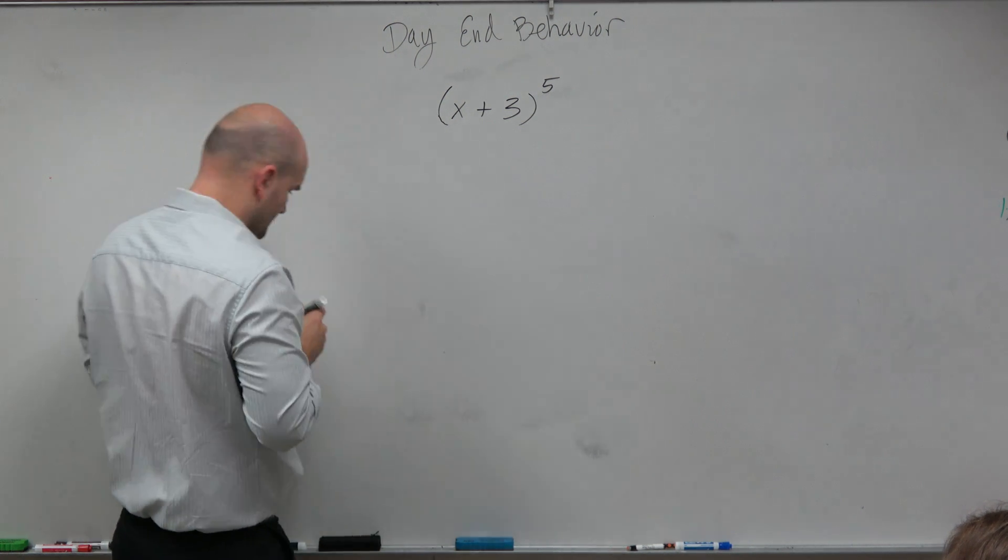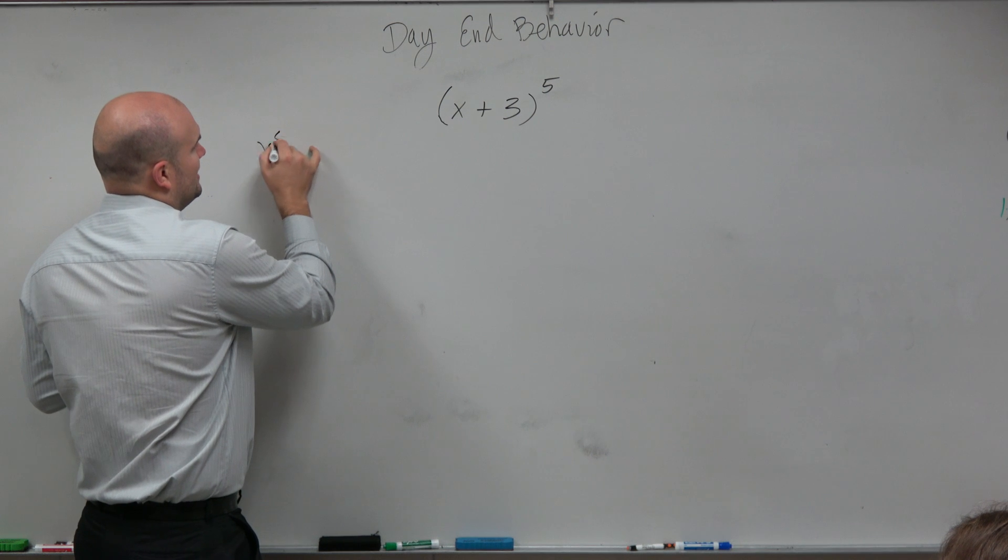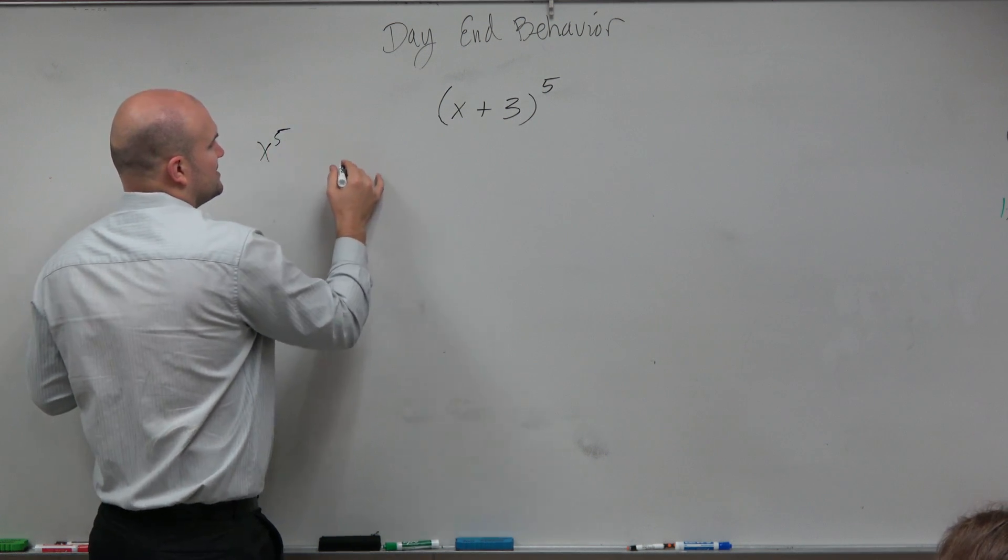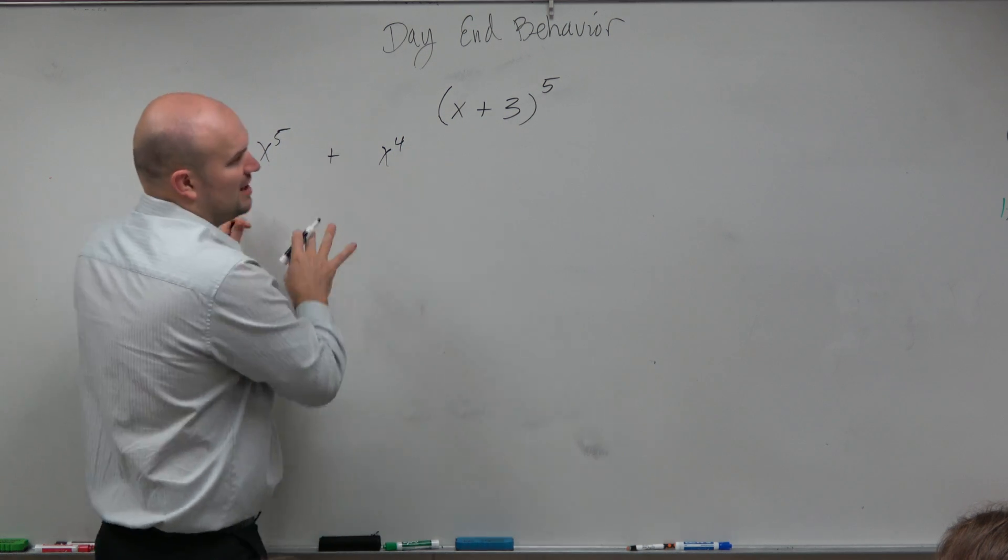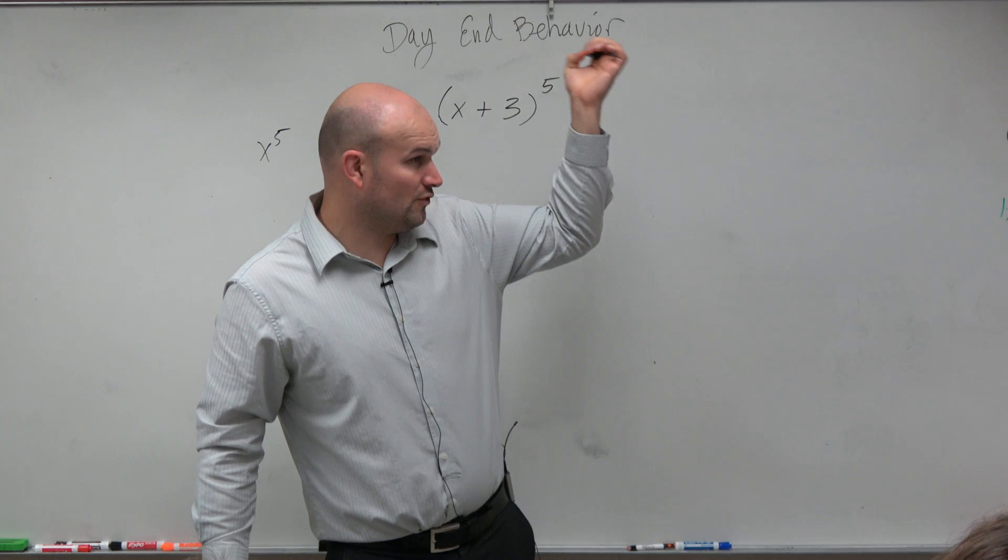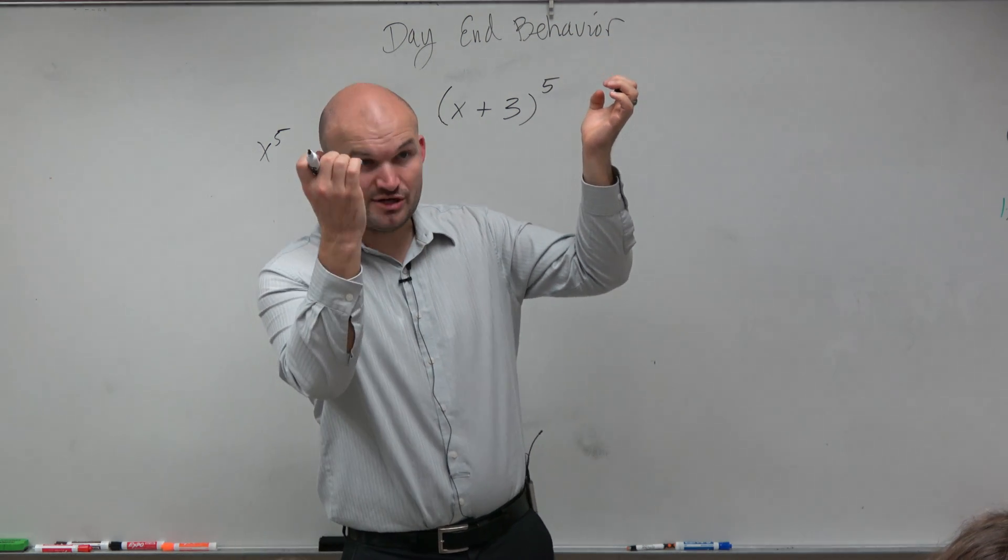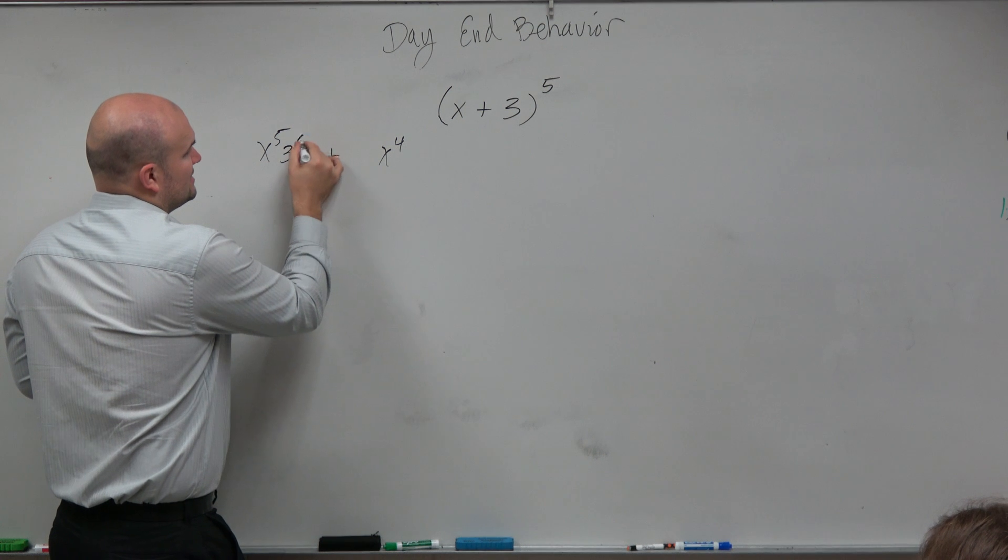So I mean, if I'm going to break this up, I could say this is going to be x to the fifth. Then there's a plus x to the fourth. And well, actually, let's continue. I don't want to go too far ahead. So the first term was the first term to the fourth power, and the second term to the zero power, correct? So I could say x to the fifth, 3 to the zero.